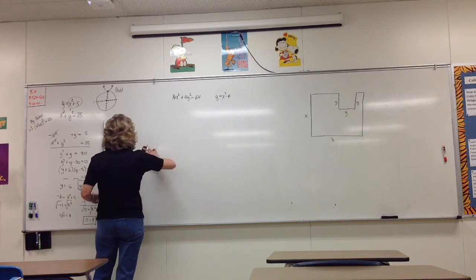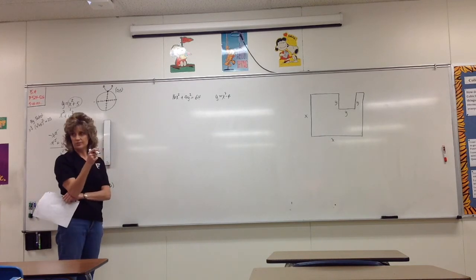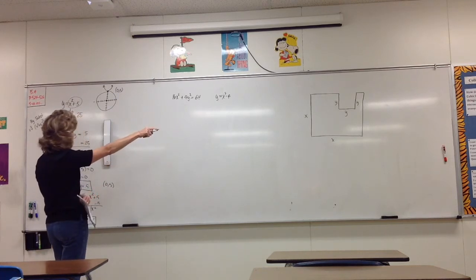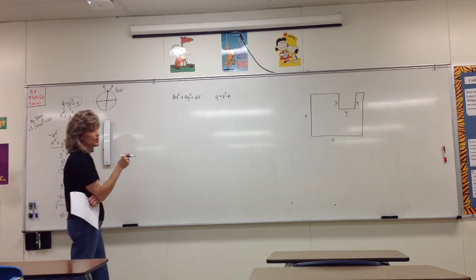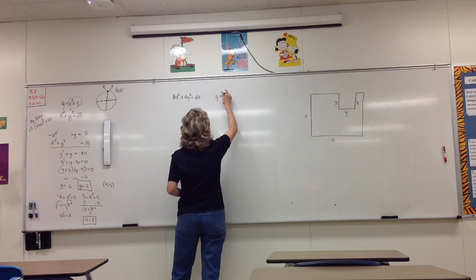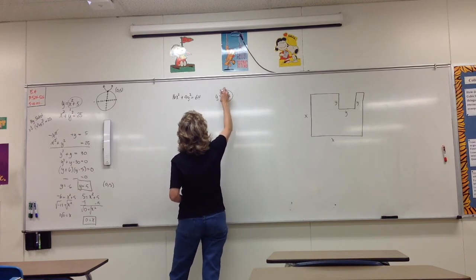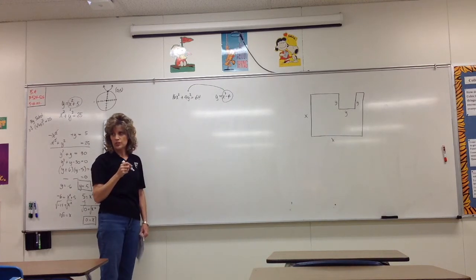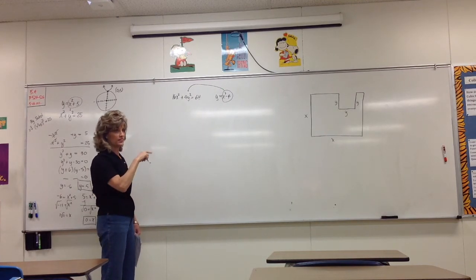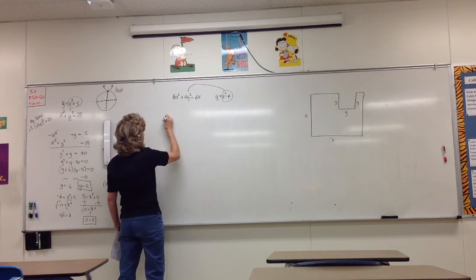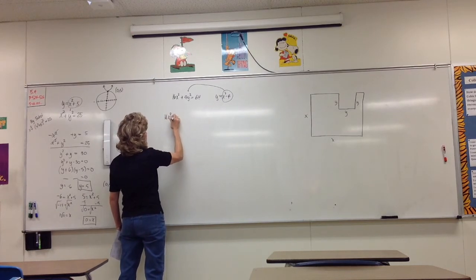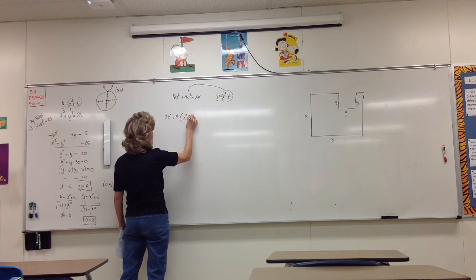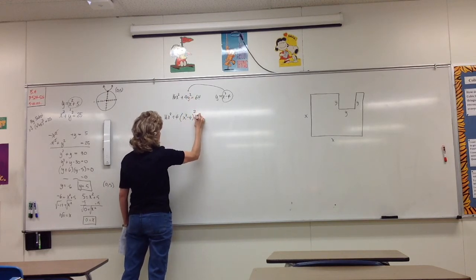We can do substitution: everywhere you see y, replace it with x squared minus 4. But be careful — y is squared, so you'll have 16x squared plus 4 times (x squared minus 4) all squared equals 64.